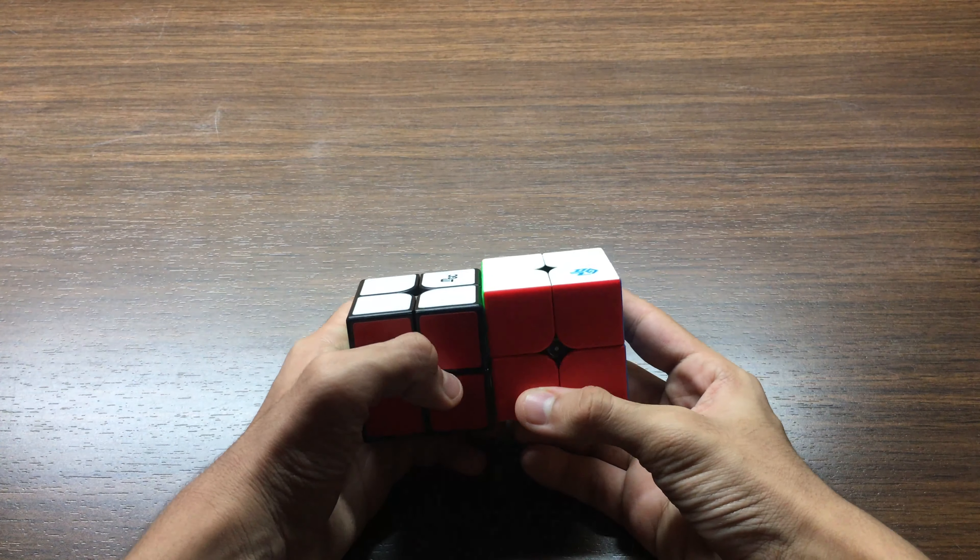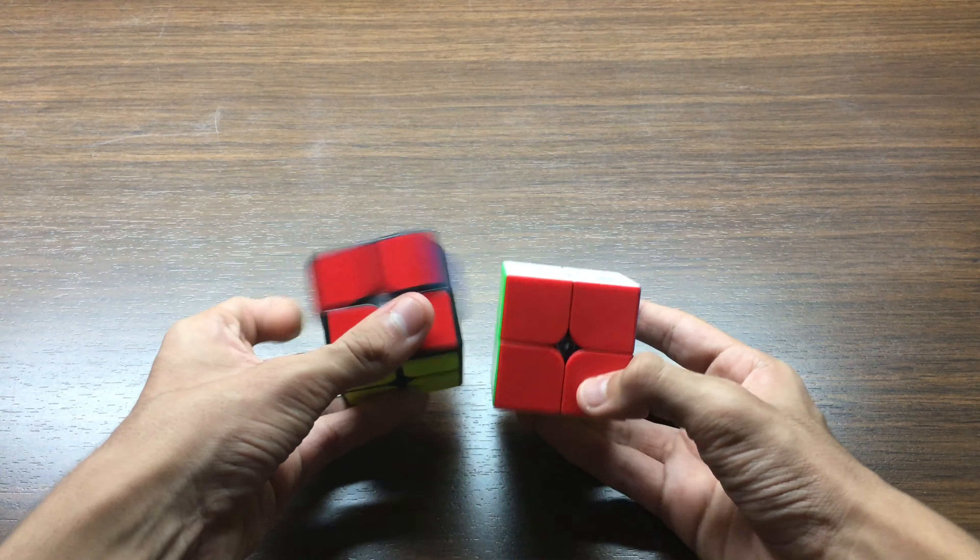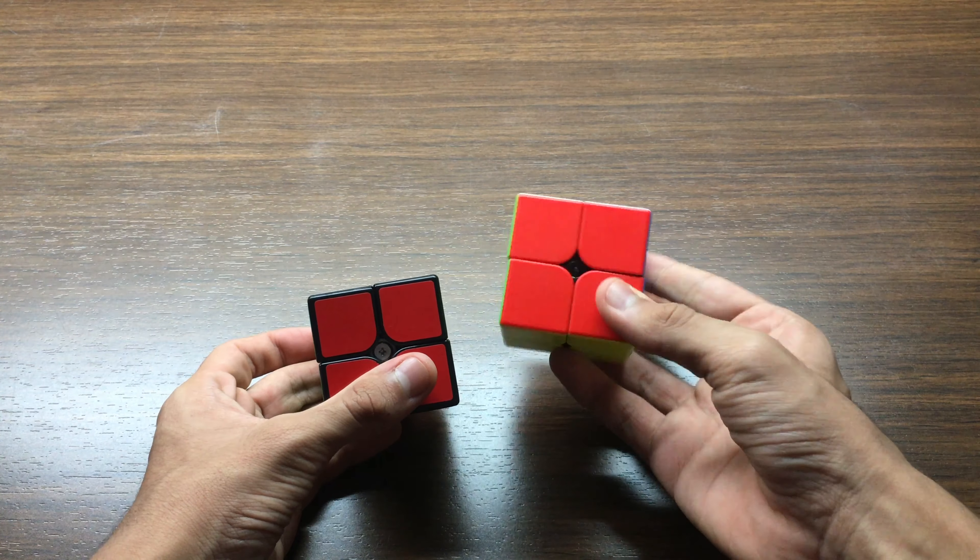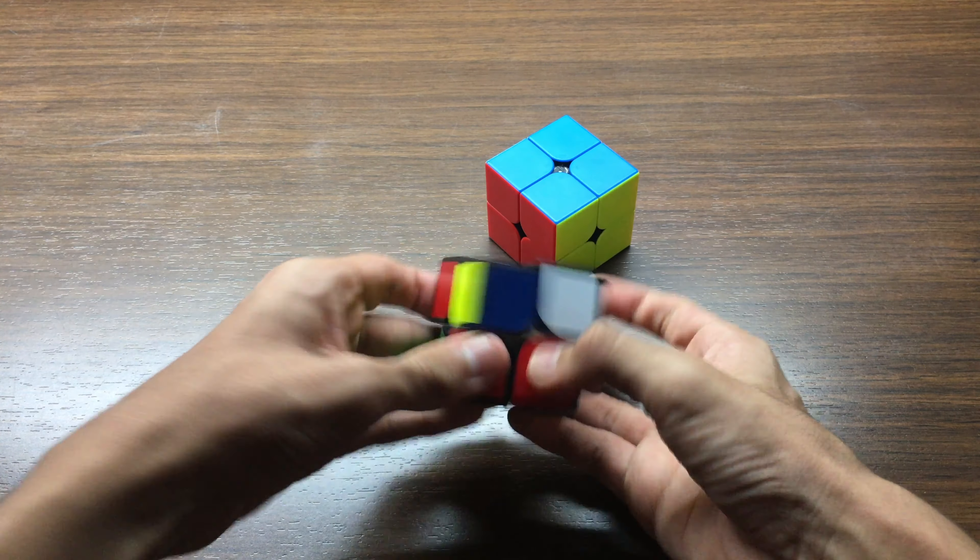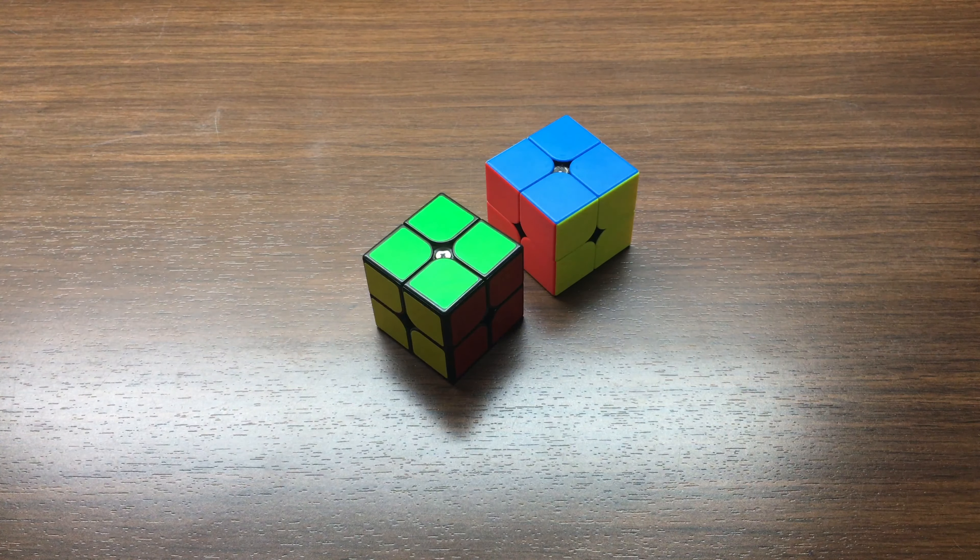Starting off with 2x2, here are the puzzles I could use. This is the YJ MGC 2x2 and this is the GAN 251M. My goals are to get a couple of sub 3 averages, podium and maybe even win.